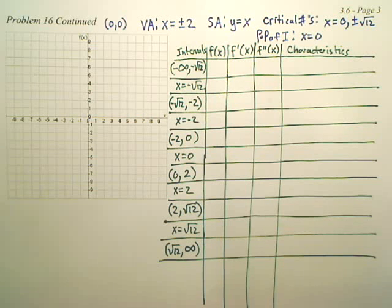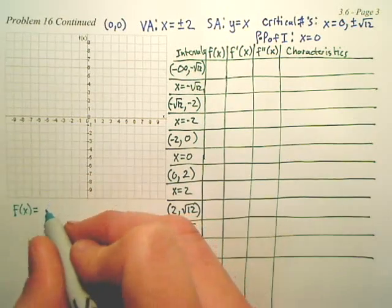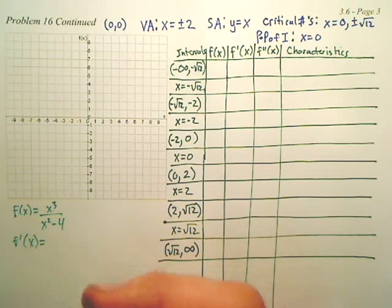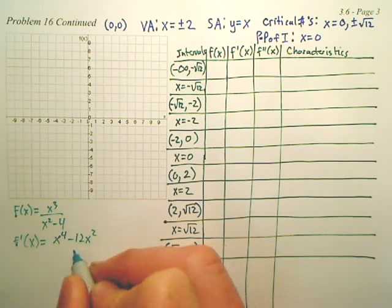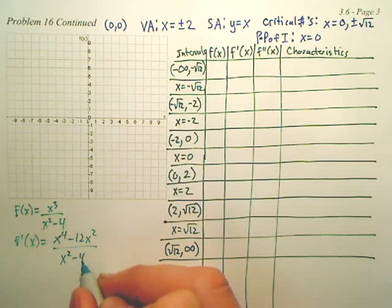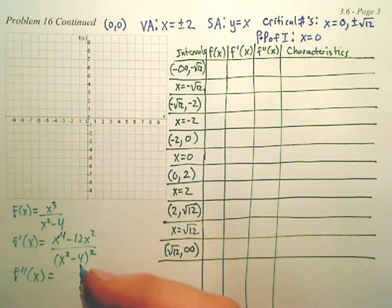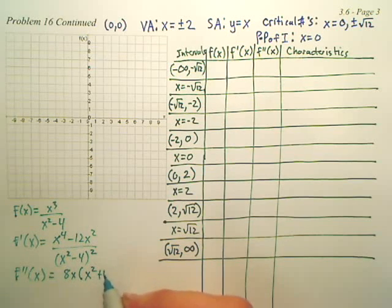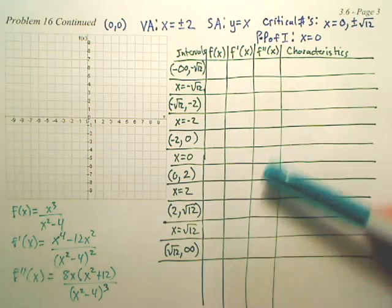Now what we need to do real quick is we probably want our derivatives to look at. We have f of x equals x cubed over x squared minus 4. The first derivative is x to the fourth minus 12x squared over x squared minus 4 squared. And then the second derivative is equal to a simplified version of 8x times x squared plus 12 over x squared minus 4 cubed. You need those three on this page because for all these columns, aren't we plugging into those three things?